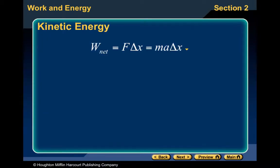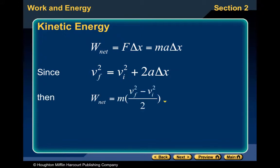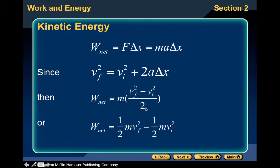Kinetic energy — well, you know that the net work is force times the change in X. If force equals ma, we can say ma times the change in X equals the distance traveled. We know this equation: VF squared equals VI squared plus 2a times delta X. So we can substitute for a·delta X, rearranging to get M times (VF squared minus VI squared) over two.